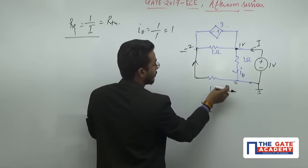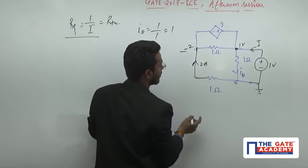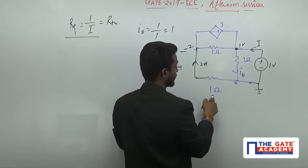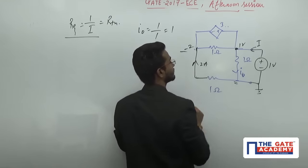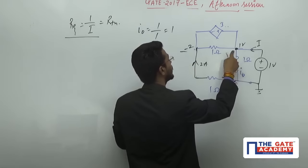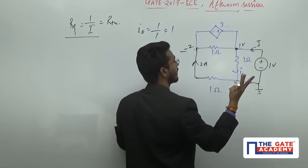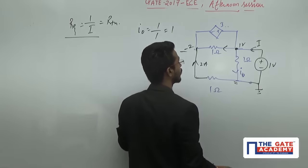The current will flow from zero to minus two. The potential difference is two, so two divided by one gives a current of two amperes upward. From one to minus two the difference is three, meaning from higher potential to lower potential.